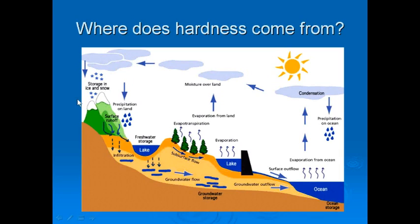So where does all this stuff come from? Well, it comes from the hydrologic cycle. What happens is the water starts off in the ocean. It evaporates, and basically evaporation is like water distillation — pure water comes up off the ocean from heat and whatnot. It goes up in the air, it condenses, and some of it falls back into the ocean as precipitation.